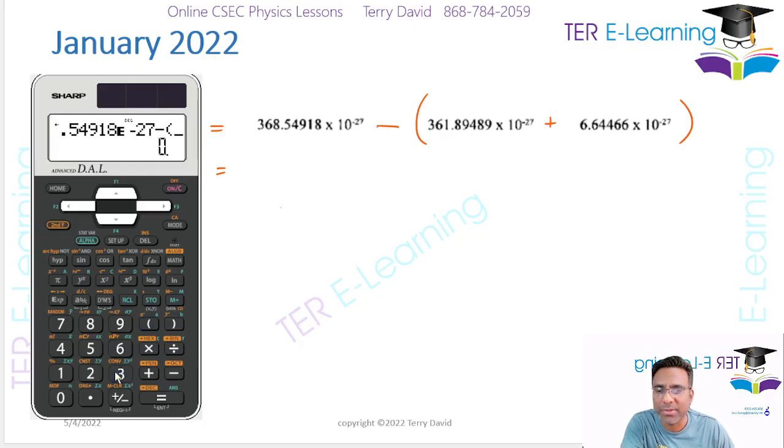Plus 6.64466 by 10 to the minus 27, close the brackets, equal, and I'm getting 9.63 by 10 to the minus 30. 9.63 by 10 to the minus 30 kilograms. So that's your mass defect.